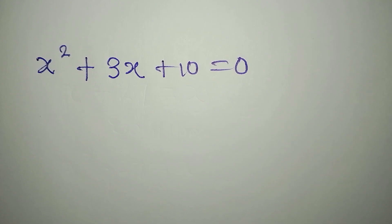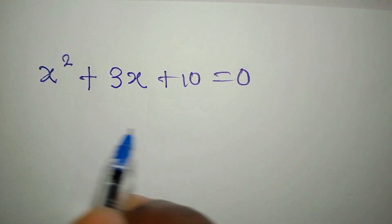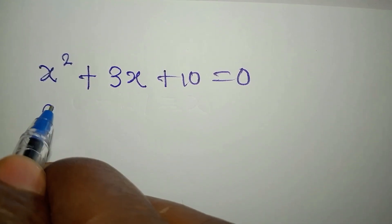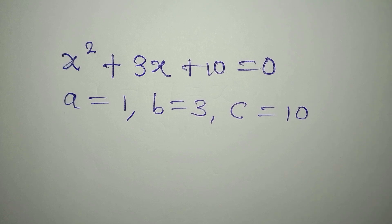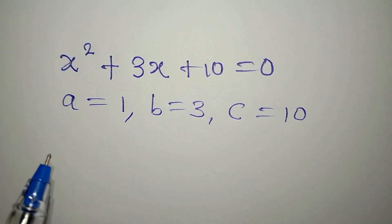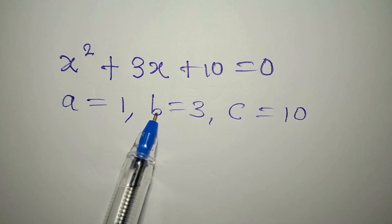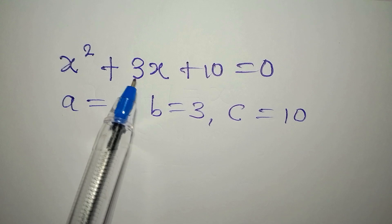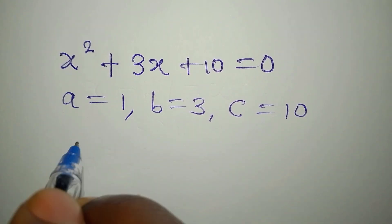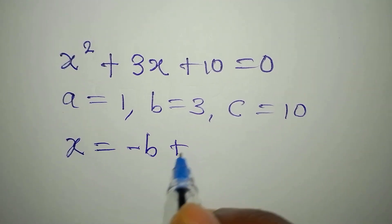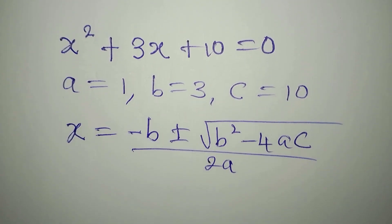The next step is to go back to the quadratic expression x squared plus 3x plus 10 and equate it to zero. We will use the quadratic formula method. For the formula, a equals 1, b equals 3, and c equals 10. Here, a is the coefficient of x squared, b is the coefficient of x which is 3, and c is the constant which is 10.